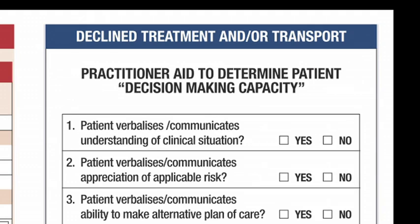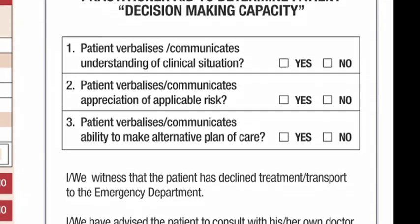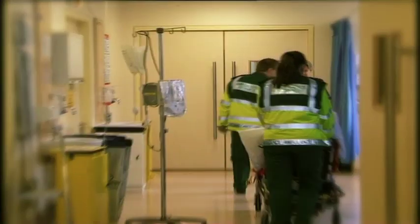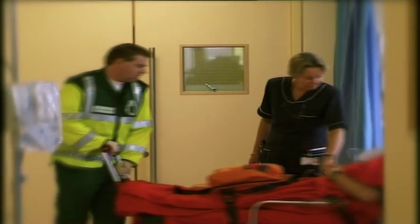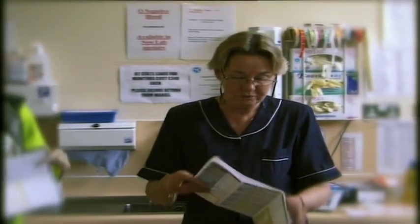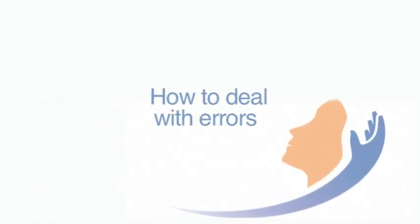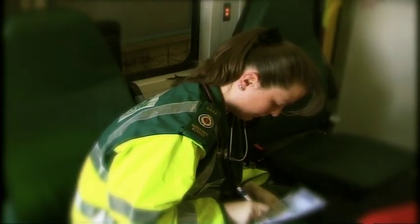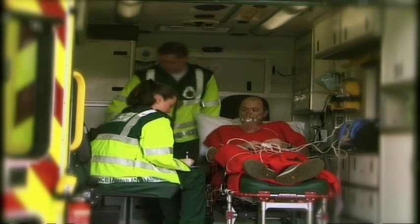Declined treatment and/or transport: where a patient declines treatment and/or transport, determine patient decision making capacity and select the appropriate tick box. Enter PIN and report to the communication centre. As part of the handover of the patient at the receiving hospital or destination facility, the top copy of the completed PCR is handed over to the health professional who takes over responsibility for the patient. The second copy is retained by the ambulance service. Errors should be addressed as follows: cross through the incorrect entry with one line only, initial the correction and write the correction close to the error or use an arrow to clarify the correction. Do not obliterate an error or use correction fluid. You have now successfully completed your patient care report, which will contribute in a very significant way to ensuring that high quality health information is available to support the highest standard of care being delivered to the patient.